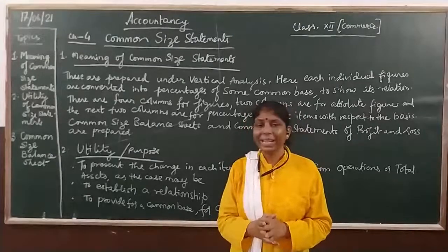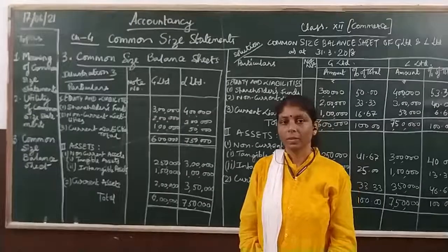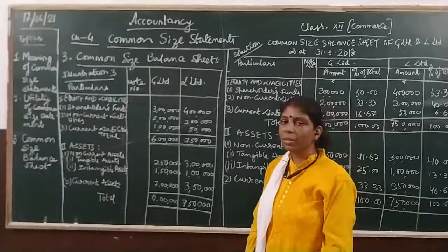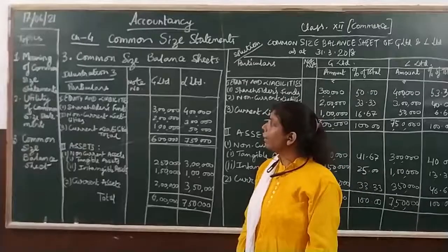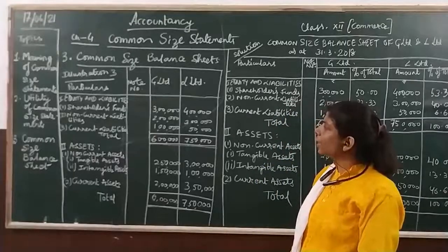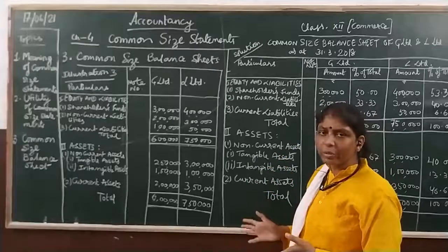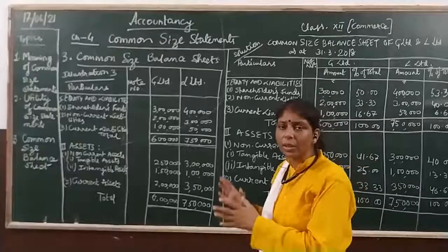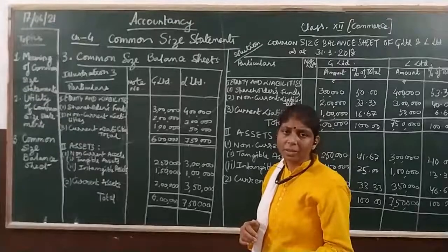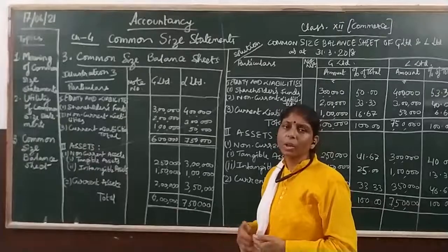Now we will move on to an illustration covering common size balance sheet. We will do a sum from your book — this is illustration 3 from the third book. You have to solve the question, prepare the common size balance sheet, and then give your comments on the analysis.